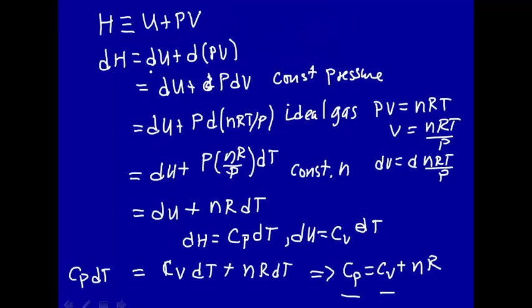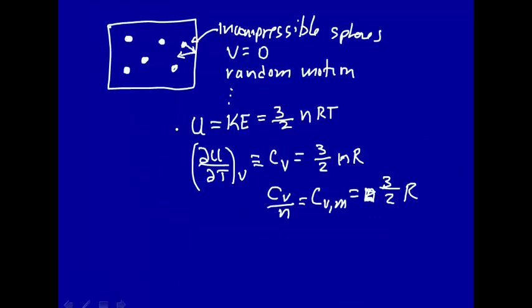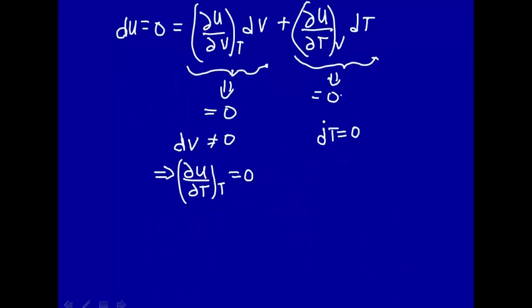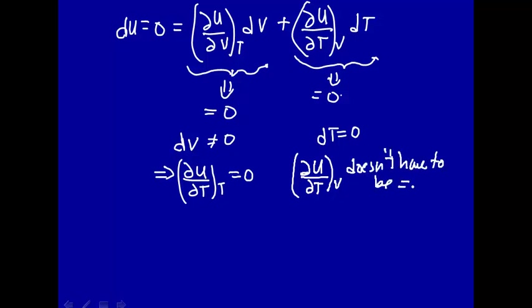Why is dT equal to zero? The internal energy of an ideal gas depends only on temperature. So if the internal energy does not change, then the temperature does not change. That means for an ideal gas, if the internal energy does not change, therefore the temperature does not change.